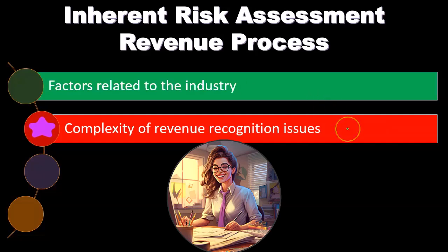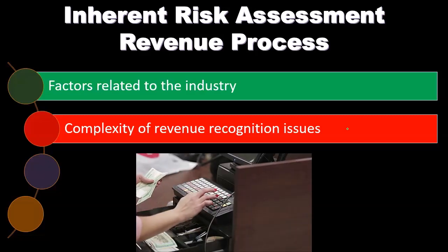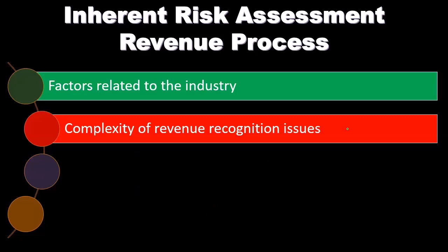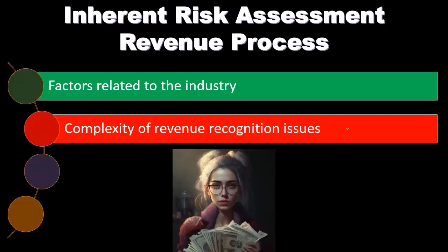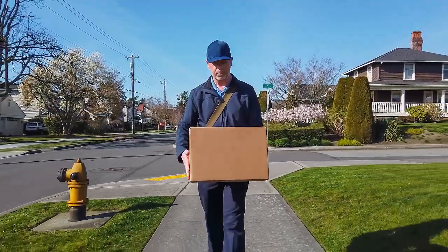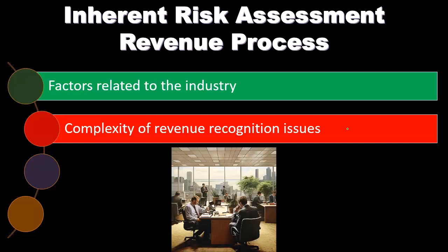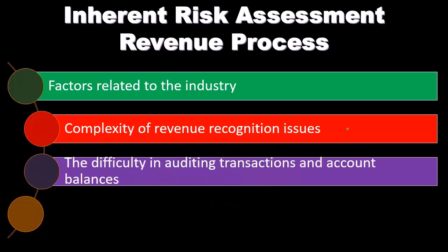Complexity of revenue recognition is another factor. How complex is the revenue recognition process? A straightforward example is a store where goods are exchanged for cash at the same point in time. If accounts receivable are involved, it becomes more complex. Add shipping, cash discounts, or returns and allowances, and the process becomes increasingly complex.